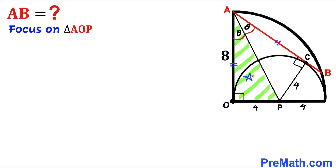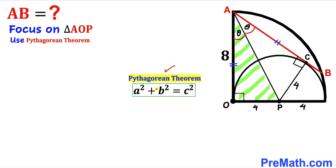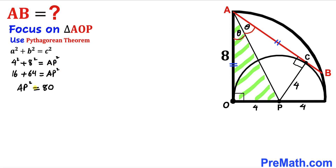Now we focus on right triangle AOP and apply the Pythagorean theorem to calculate the unknown side AP. Using A² + B² = C², our hypotenuse is AP and our two legs are 4 and 8. So 4² + 8² = AP². Taking the square root of both sides, AP = √80 = 4√5.